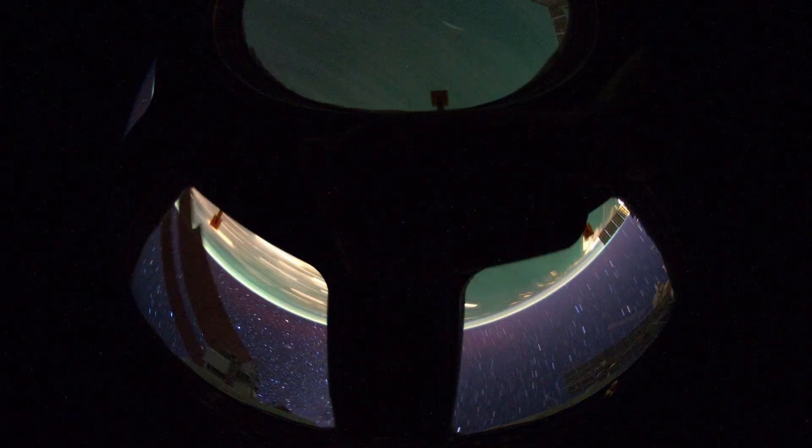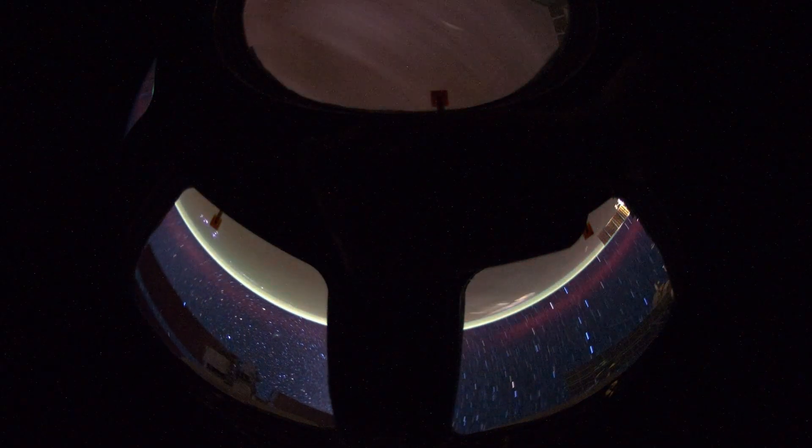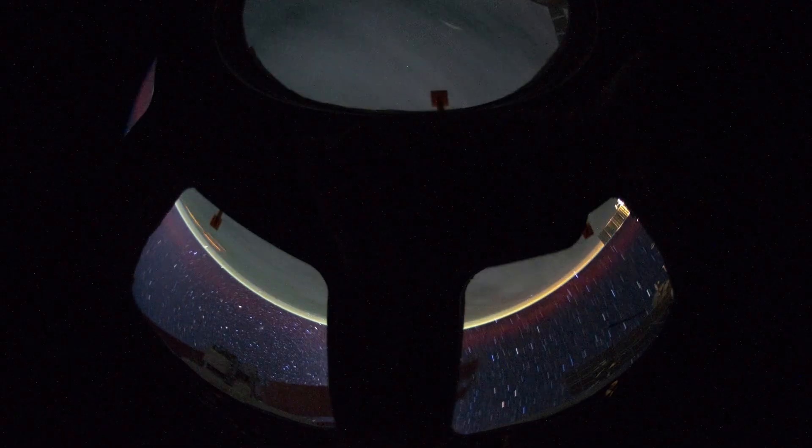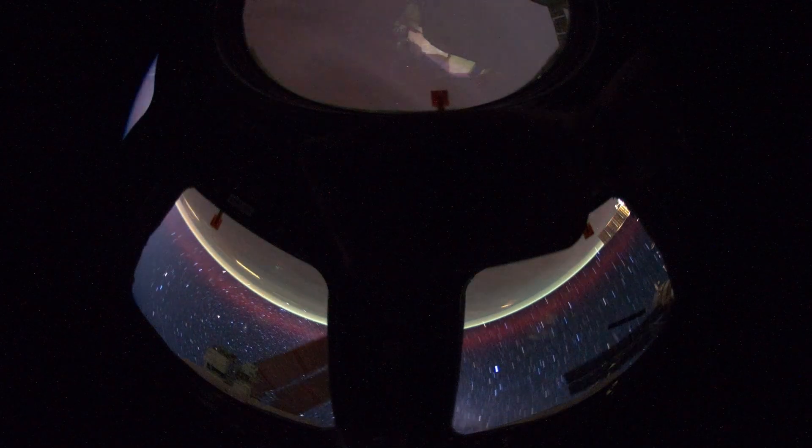On July 1st, NASA spotted an interstellar object unlike any before, but the real shock came later. When quantum AI analyzed its data, it uncovered something hidden, structured, and possibly intentional.